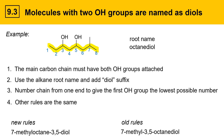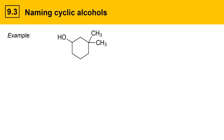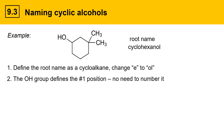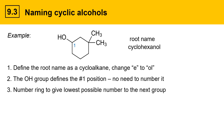This slide discusses naming cyclic alcohols. The first thing to do is define the root name as a cycloalkane and then change the -e ending to -ol. In this example, if it were an alkane it would be cyclohexane, so we change the -e ending to -ol and get cyclohexanol as the parent name. With cyclic alcohols, the OH group defines the number-one position, so there's no need to specify its location.